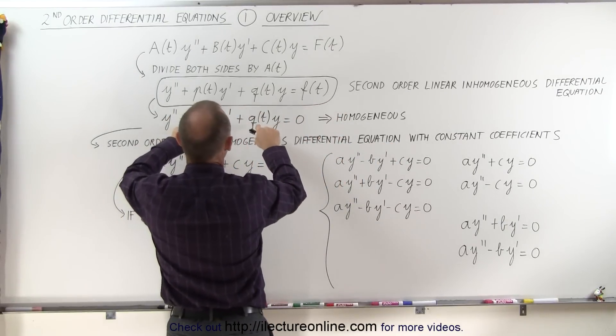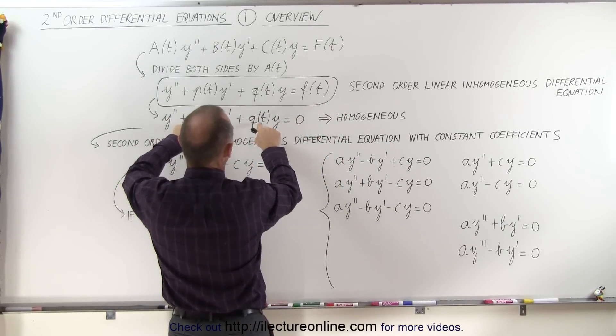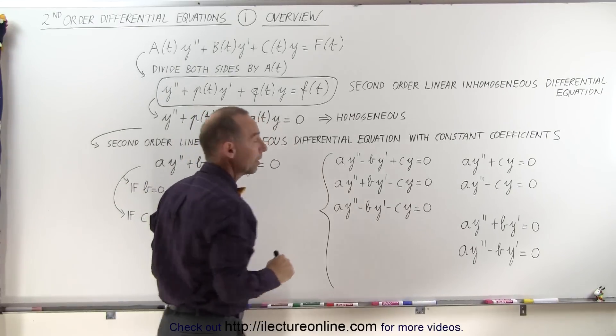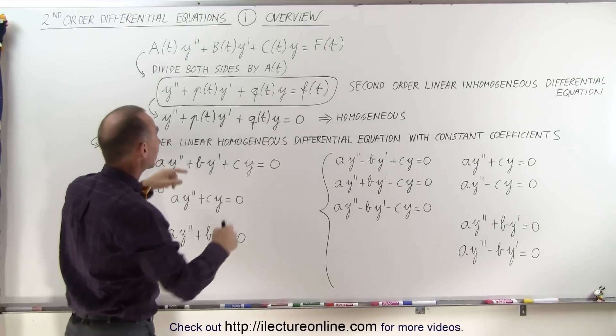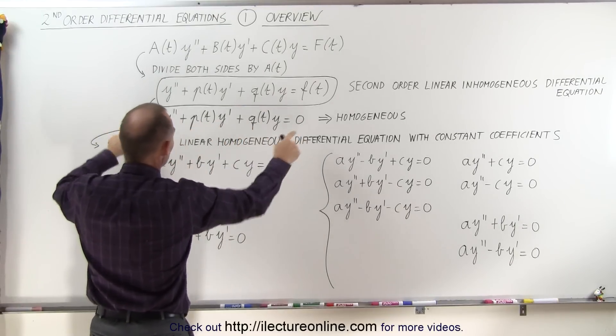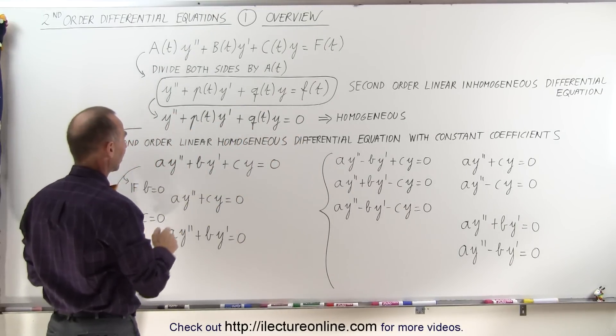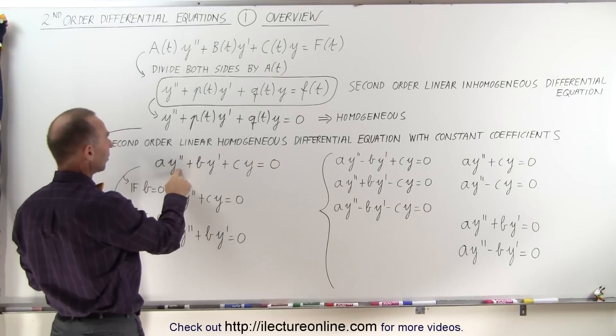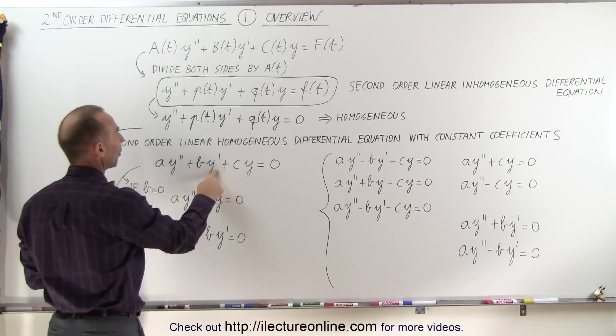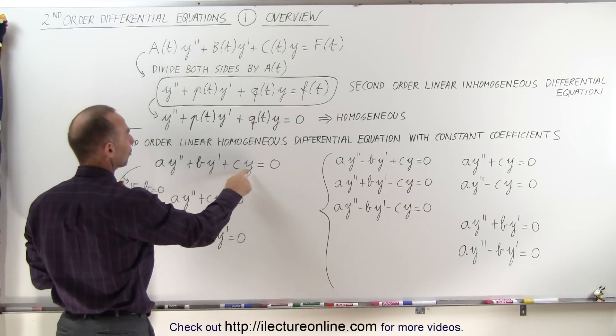And this is with non-constant coefficients because these are actually functions of t. But if we now replace those with simply constants, then this equation will be written like this. It'll be some constant times y double prime plus some constant times y prime plus another constant times y equals zero.